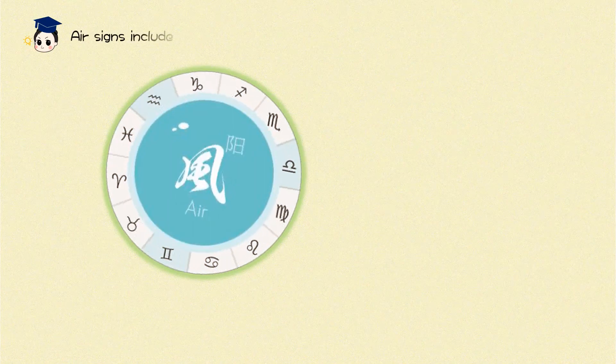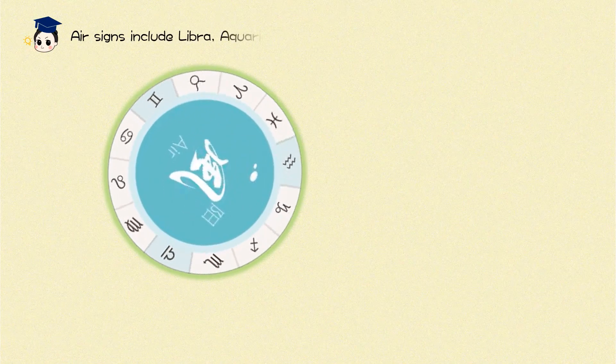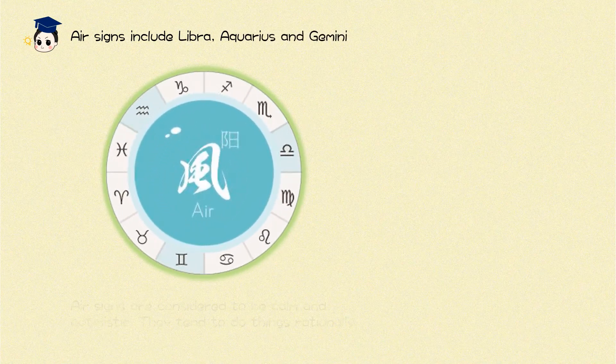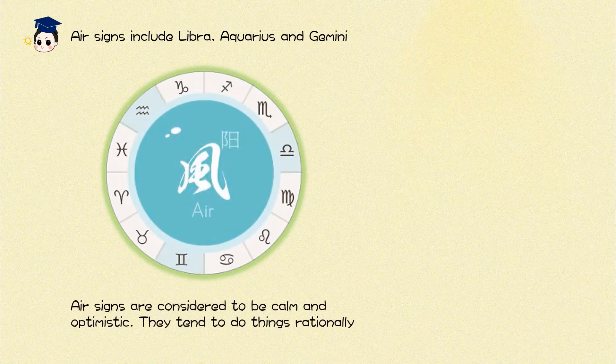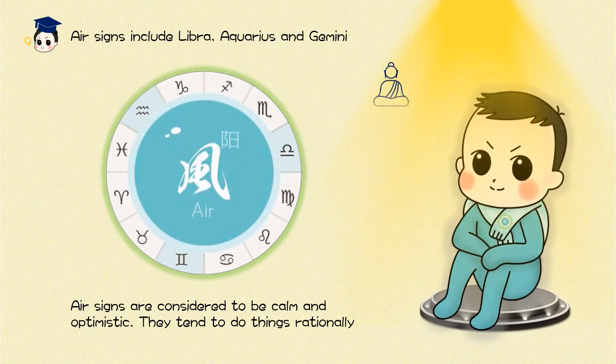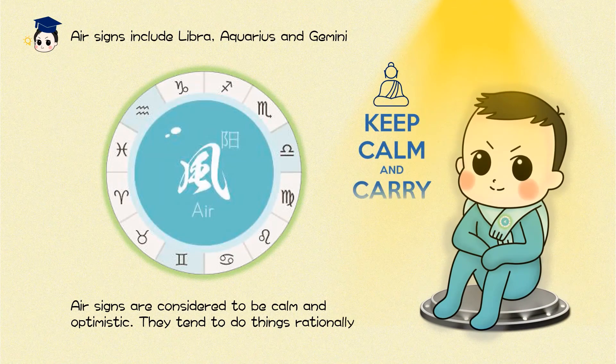Air signs include Libra, Aquarius, and Gemini. Air signs are considered to be calm and optimistic. They tend to do things rationally.